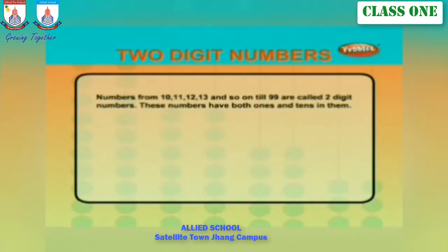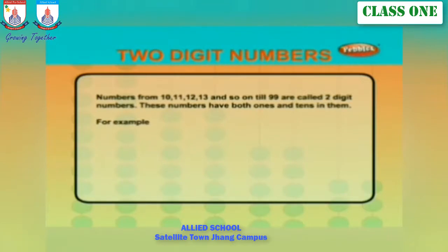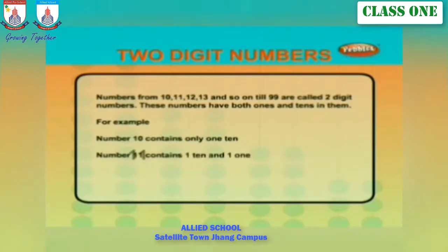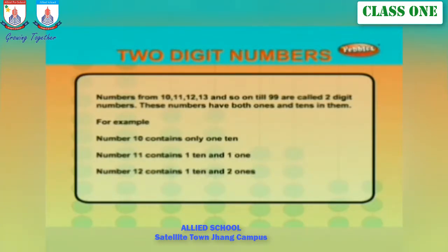Two digit numbers — numbers from ten, eleven, twelve, thirteen, and so on till ninety nine — are called two digit numbers. These numbers have both ones and tens in them. For example, number ten contains only one ten, number eleven contains one ten and one one, and number twelve contains one ten and two ones.